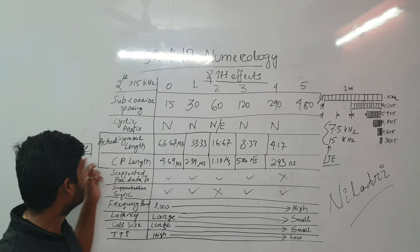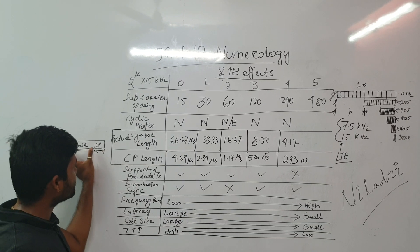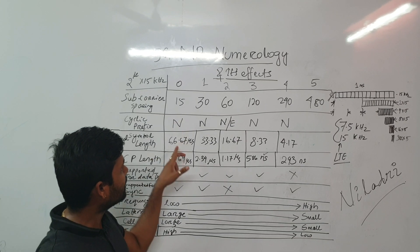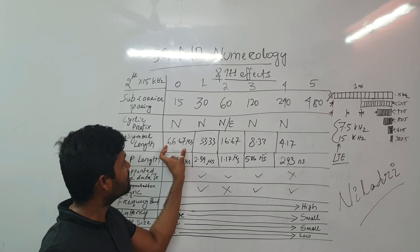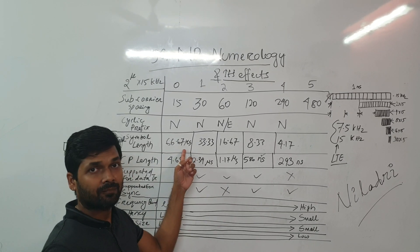Now actual symbol length, like I was talking about the symbol and then cyclic prefix. So for actual symbol, for 15 kilohertz, we have the symbol timing 66.67 microsecond.